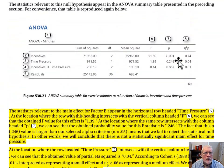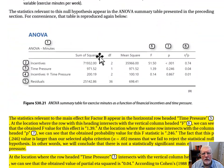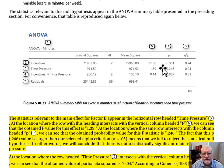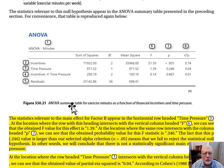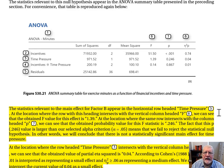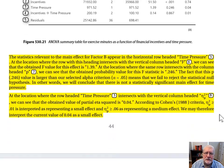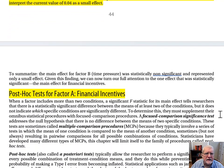To summarize our omnibus effects: we do have a statistically significant omnibus effect for incentives, but not for time pressure and not for the incentives by time pressure interaction. We've gotten the results we wanted. We have a main effect for incentives, but incentives has three treatment conditions, and that adds a complication that will be discussed in the next section.